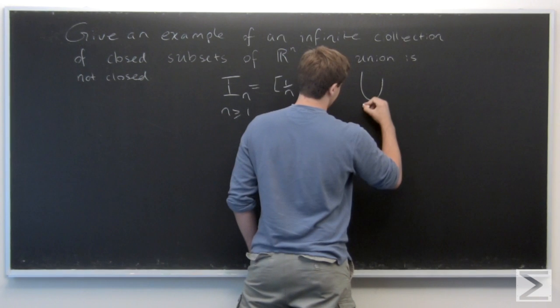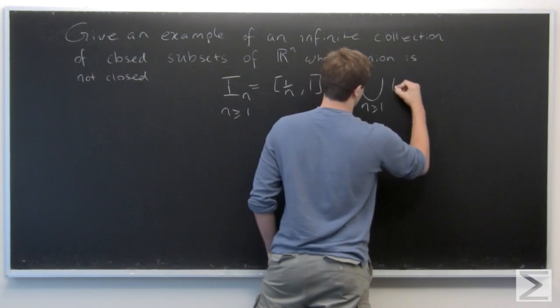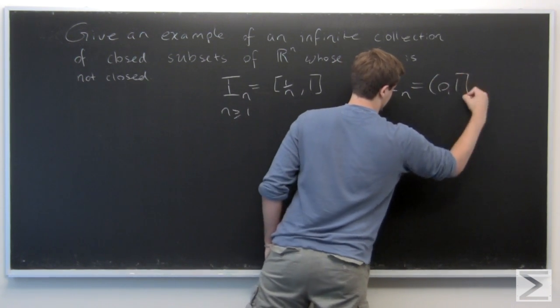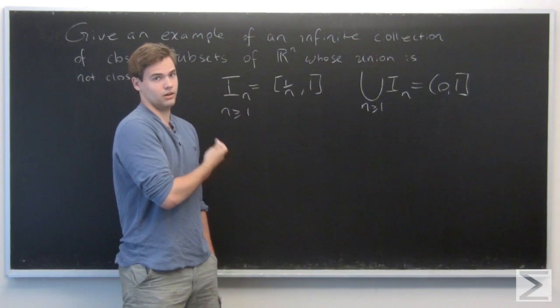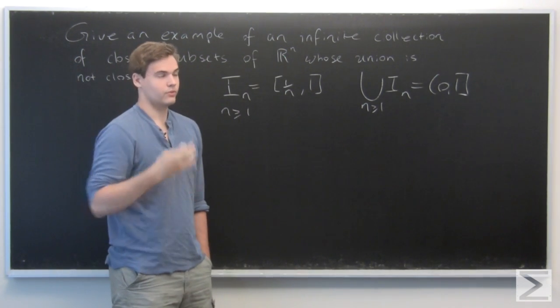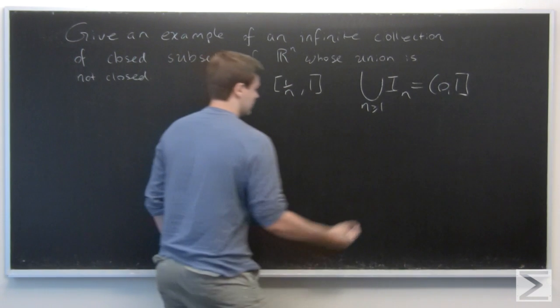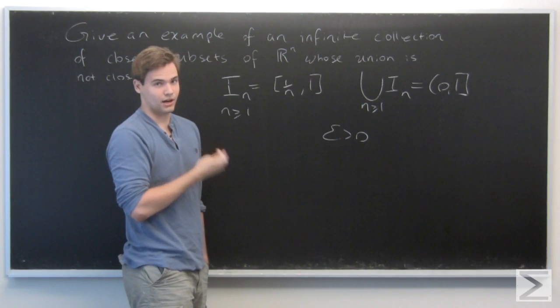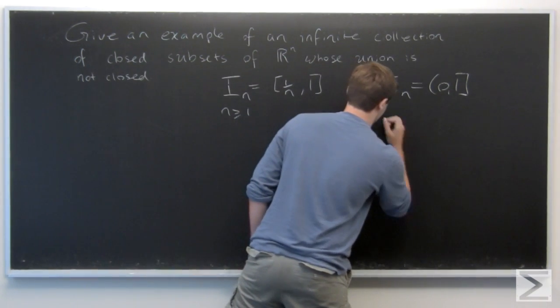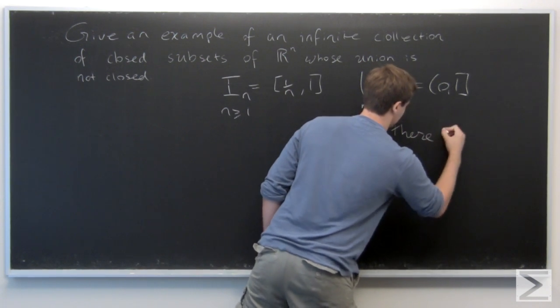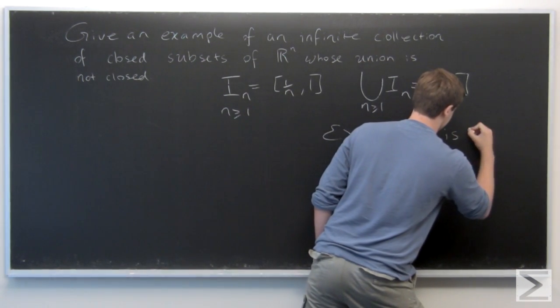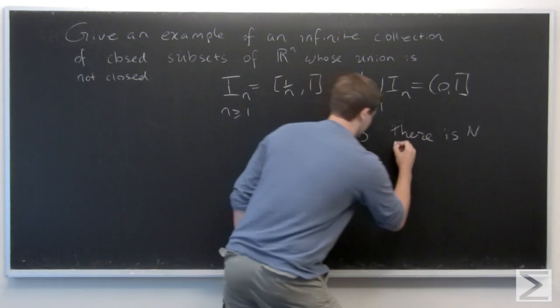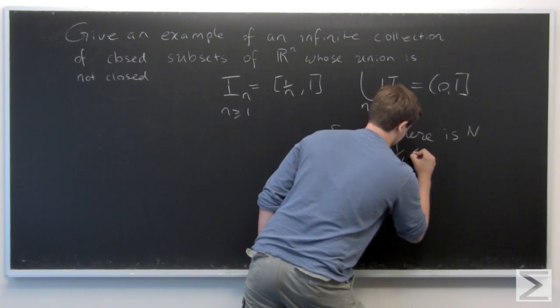And their union for n greater than or equal to 1 is this half open interval 0 to 1, because, well, after some work, when you're going through, you can show that given any epsilon positive, there is some natural number, say big N, such that 1 over n is less than epsilon.